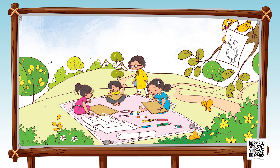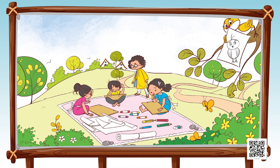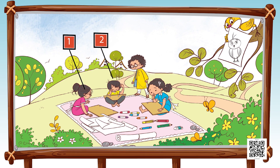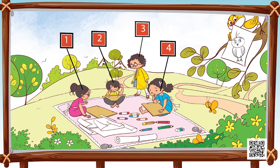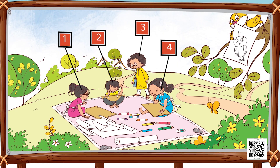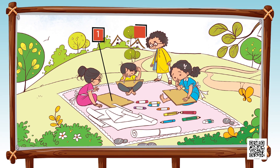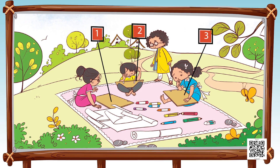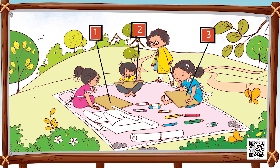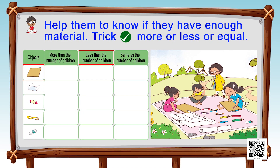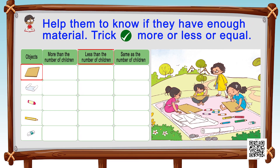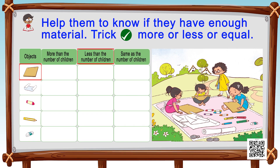How many children do we have? We have one, two, three, four — three are sitting on the ground and one is observing them, so in total we have four children. Now the number of cardboards: one, two, three — we have three cardboards. Since there are four children, the answer is it is less than the number of children, so we put a tick in the 'less than' column.